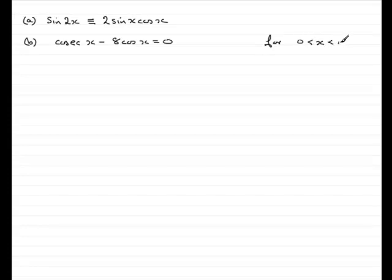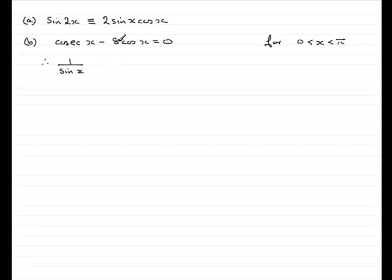There's got to be obviously some connection here with what we did above. What we've got to do is get this in terms of sines and cosines. So cosec(x) is going to be 1 over sin(x), so we'll just mark that in as 1 over sin(x), minus 8cos(x), and that equals 0.